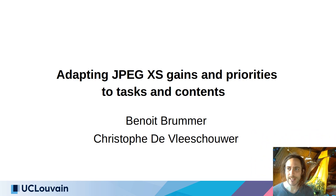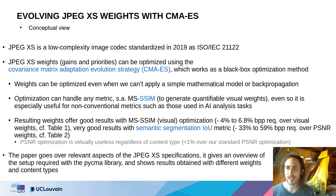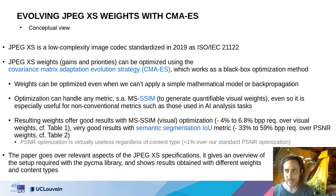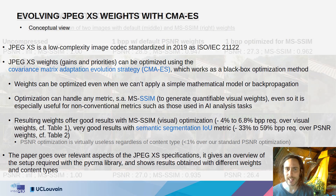In this work, we use evolutionary strategies to optimize JPEG XS weights for tasks and contents. JPEG XS is a low-complexity image codec that was standardized in 2019. We give a technical overview of the JPEG XS specifications with regards to its weight optimization, and describe how the weights can be optimized with the covariance matrix adaptation evolution strategy using the PyCMA open source library.